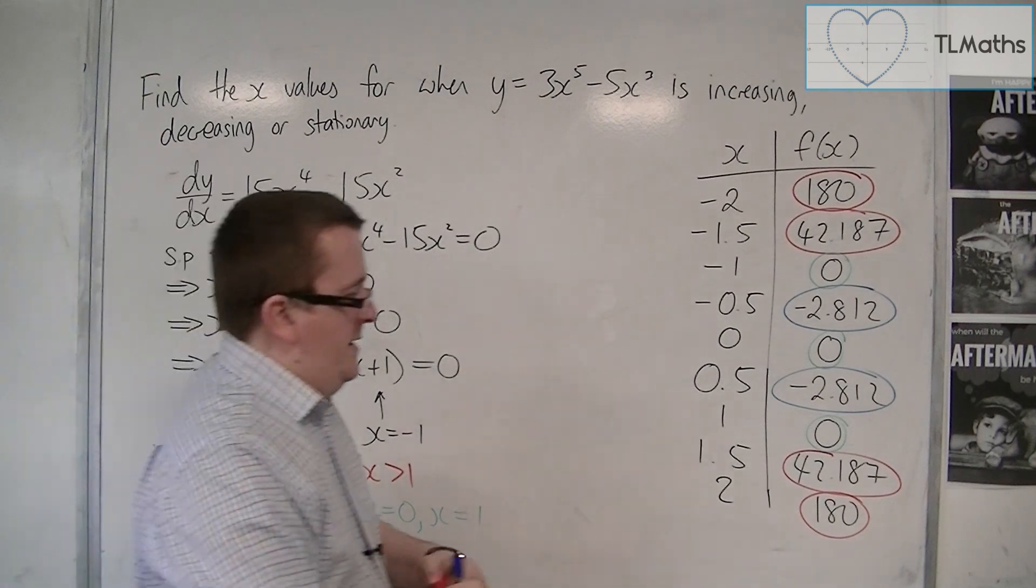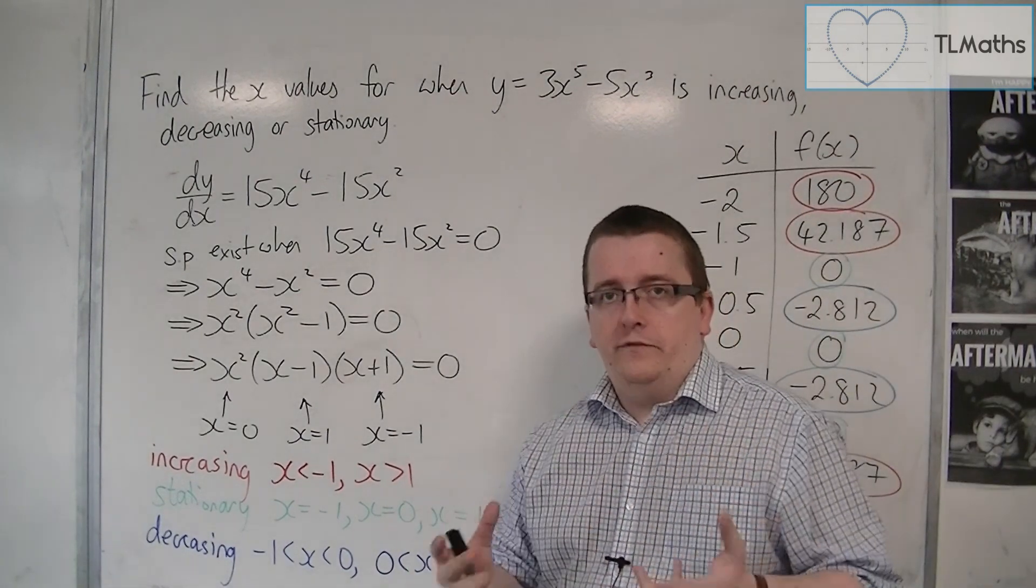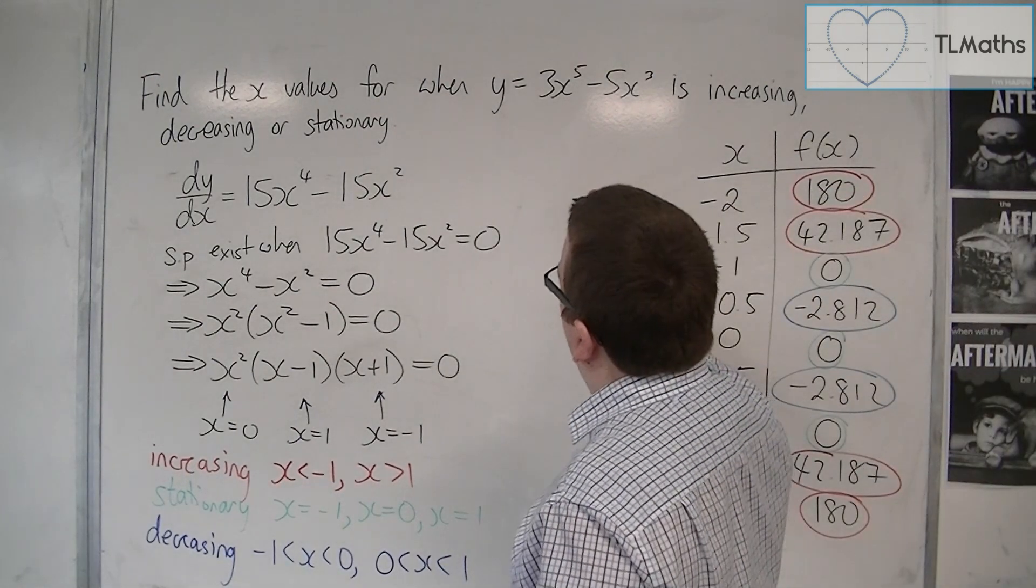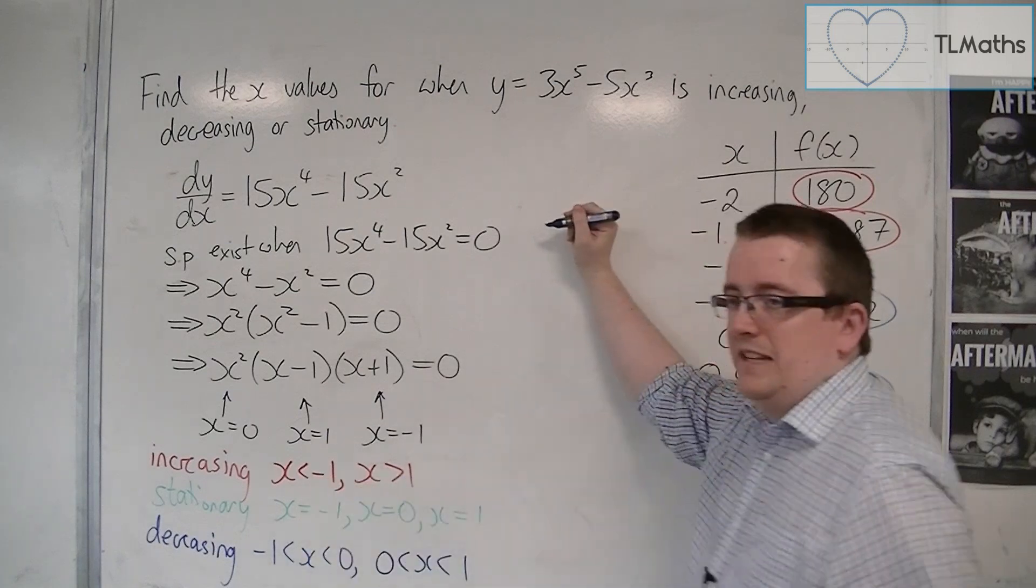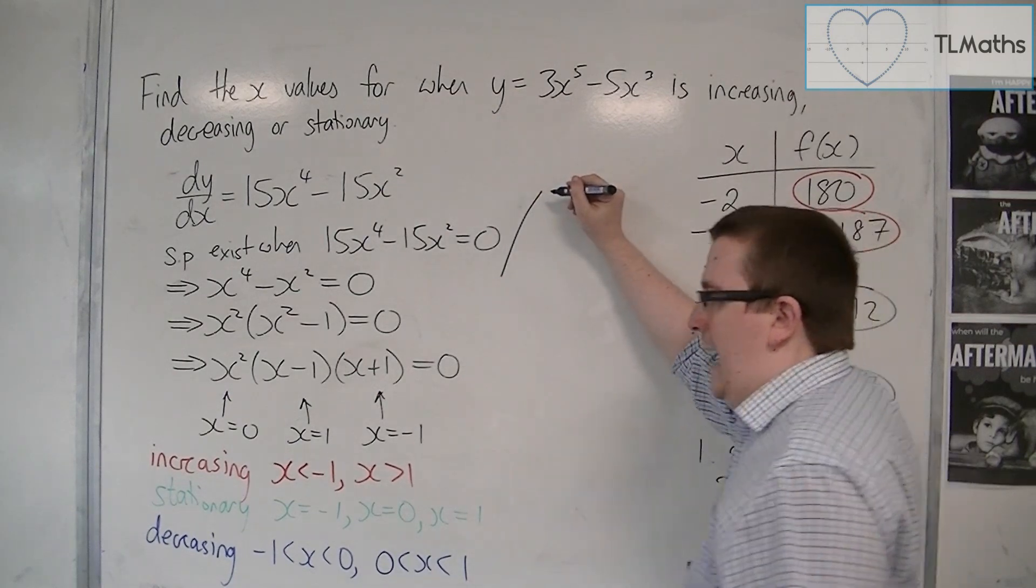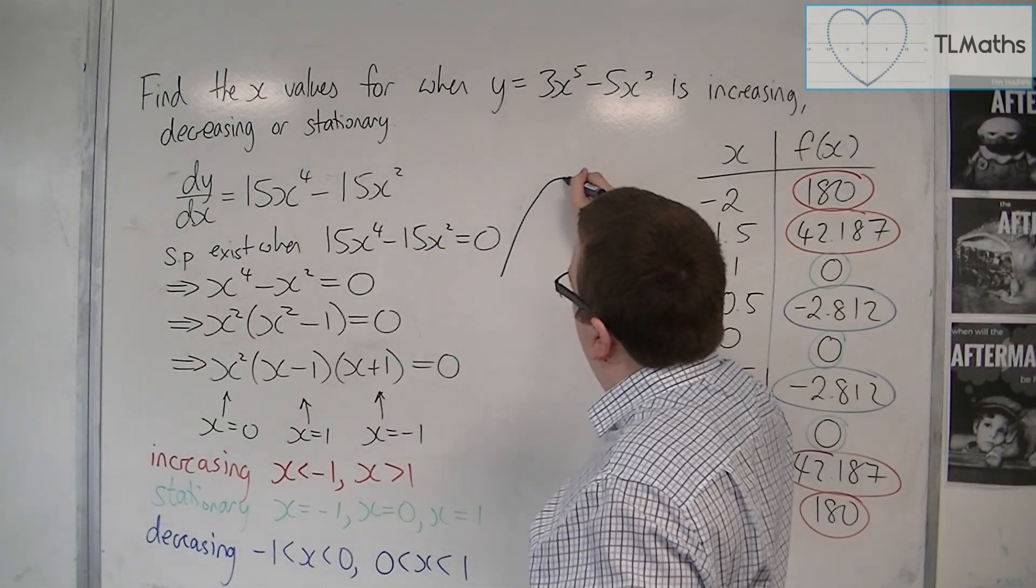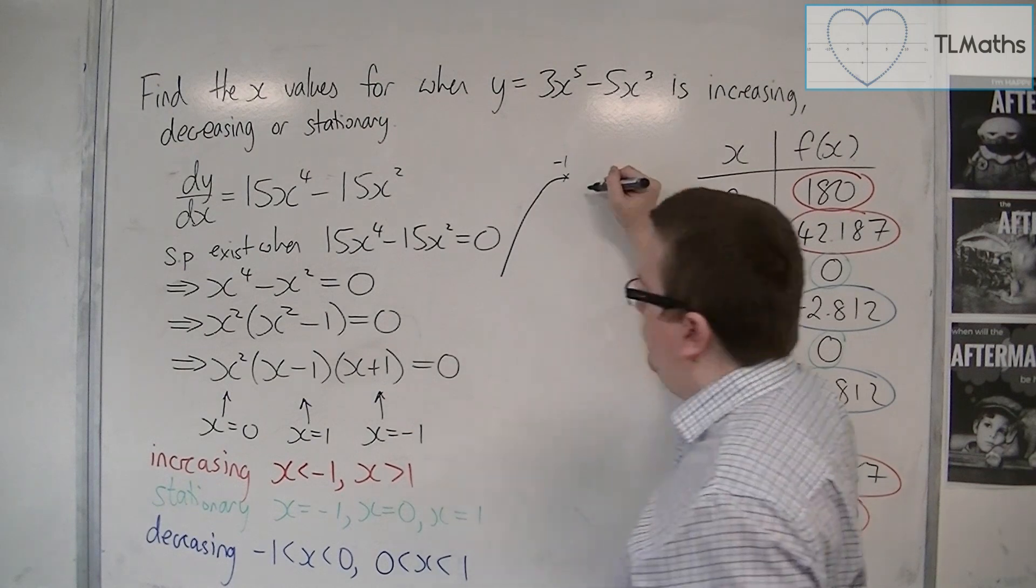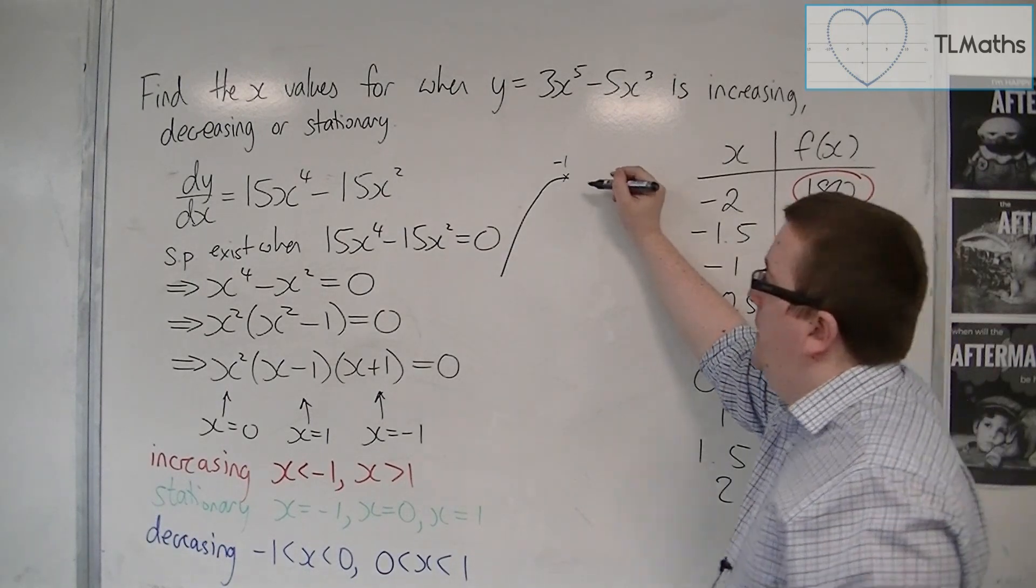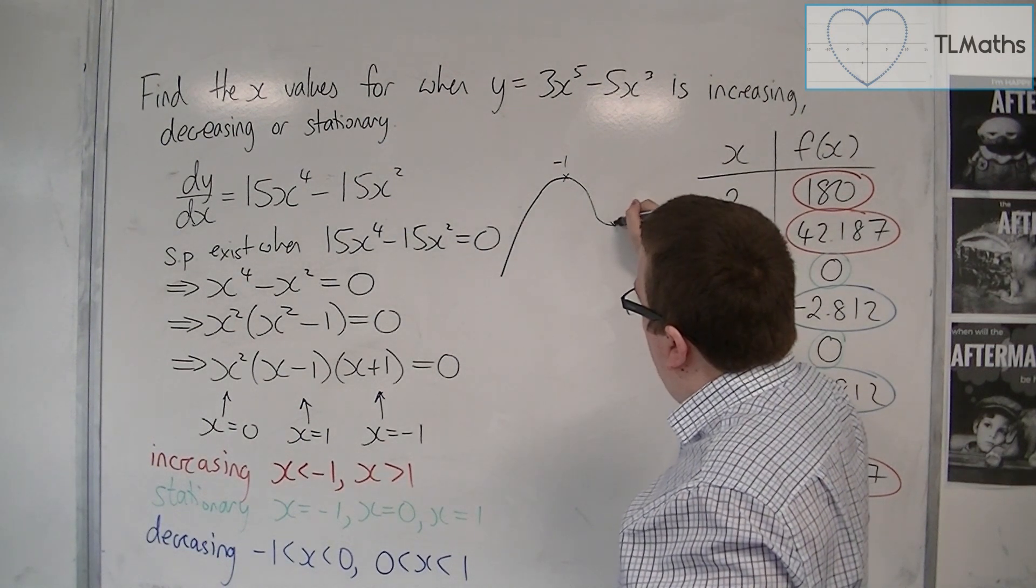Now, can this tell me what the curve is doing? So, I know that the curve is increasing when x is less than minus 1, so it starts off increasing. And when it reaches minus 1, it is stationary, so when it reaches minus 1, it is stationary. That's at minus 1. When it's between minus 1 and 0, the next stationary point, it is decreasing. And then it reaches x is 0.